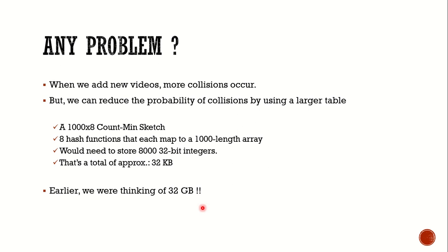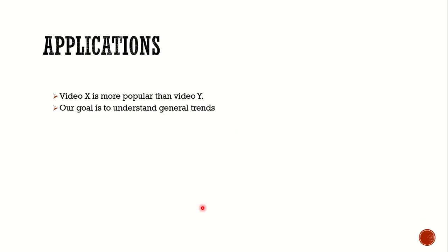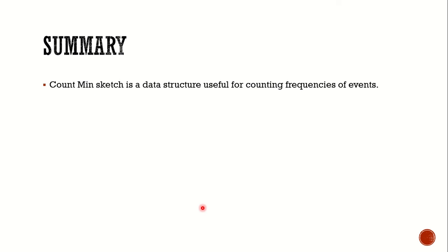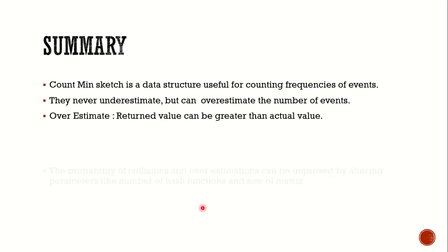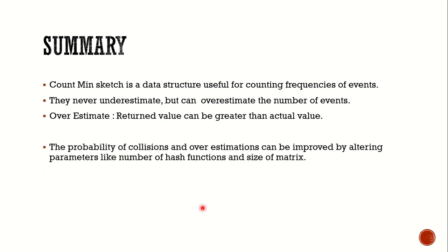Earlier we were thinking about using 32 GB, so we have significantly reduced the memory footprint. Applying this to our original problem of finding whether video X is more popular than video Y: we are not getting the exact count, but we are getting the general trend, which solves our purpose. Count Min Sketch is a data structure useful for counting frequencies of events. It never underestimates but can overestimate the count, and the probability of overestimation can be improved by altering parameters like the number of hash functions and the size of the matrix.